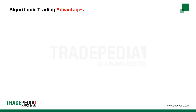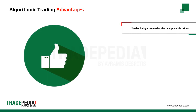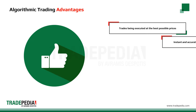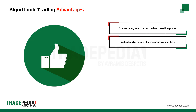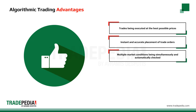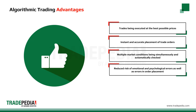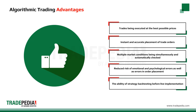Algorithmic trading provides the following benefits: trades being executed at the best possible prices, instant and accurate placement of trade orders ensuring execution at the exact desired levels, multiple market conditions being simultaneously and automatically checked, reduced risk of emotional and psychological errors as well as errors in order placement, and the ability to back test a strategy before live implementation.